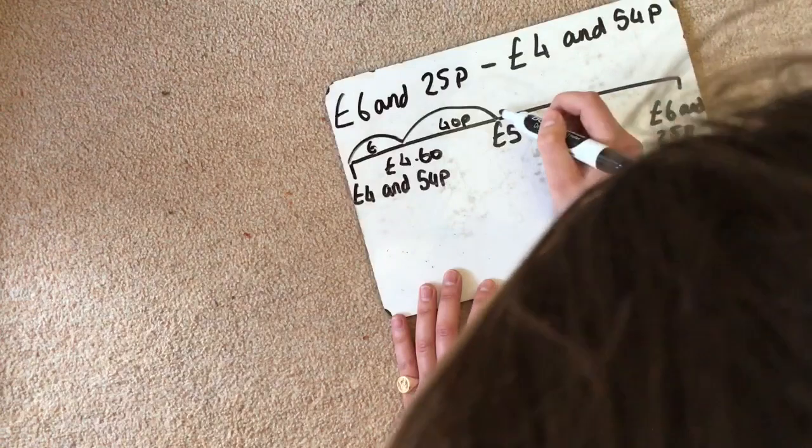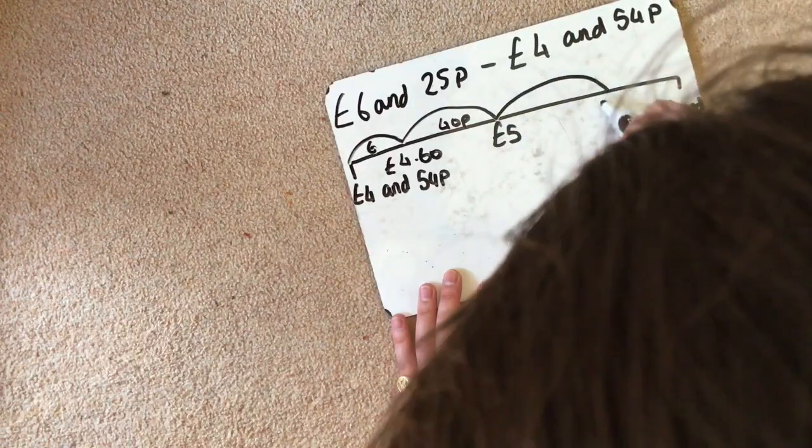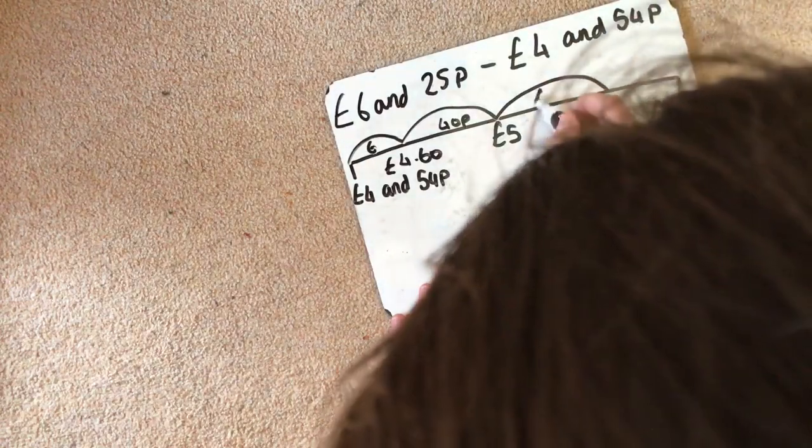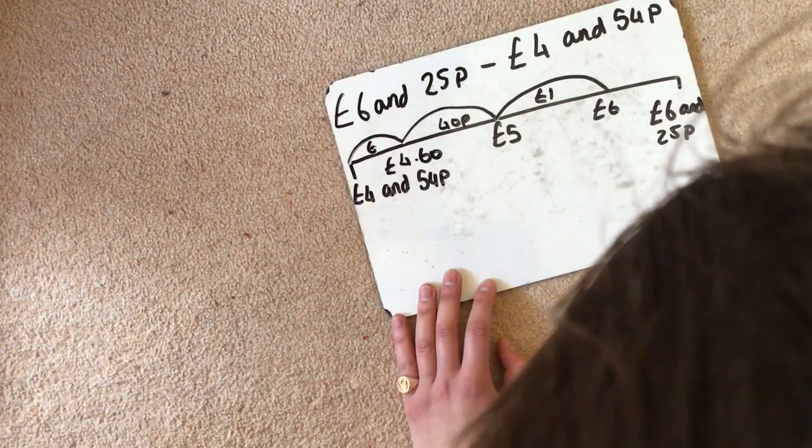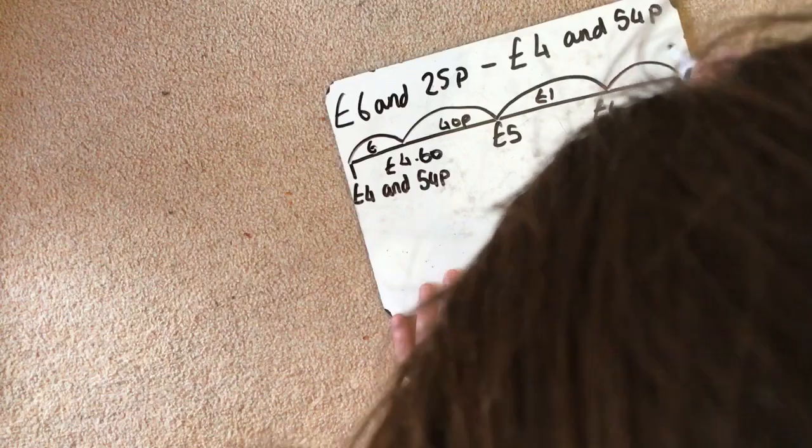Then I'm going to do a whole jump up to £6. So that's a jump of £1. And then I'm going to do my final jump up to £6.25. So that's a jump of 25p.